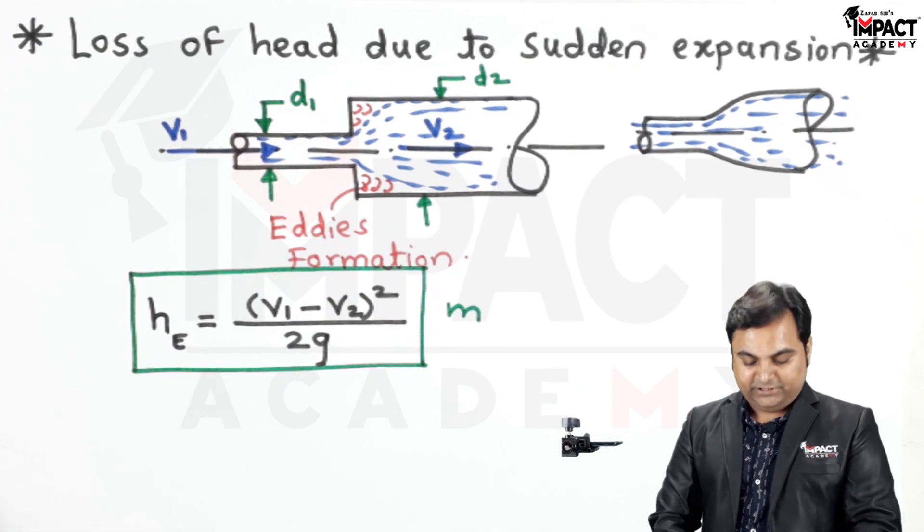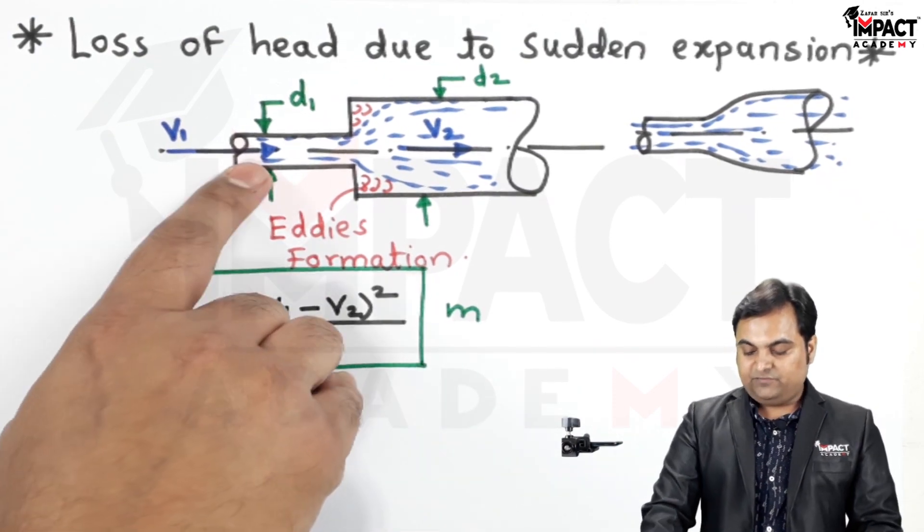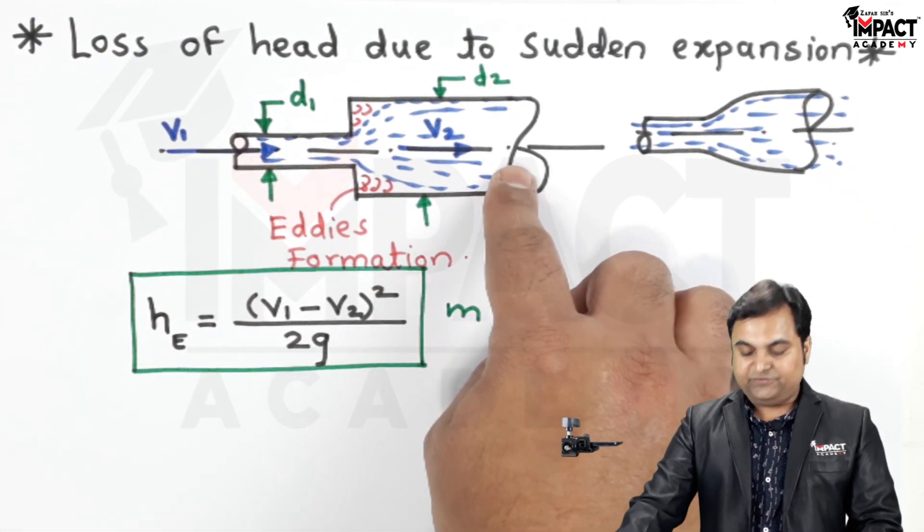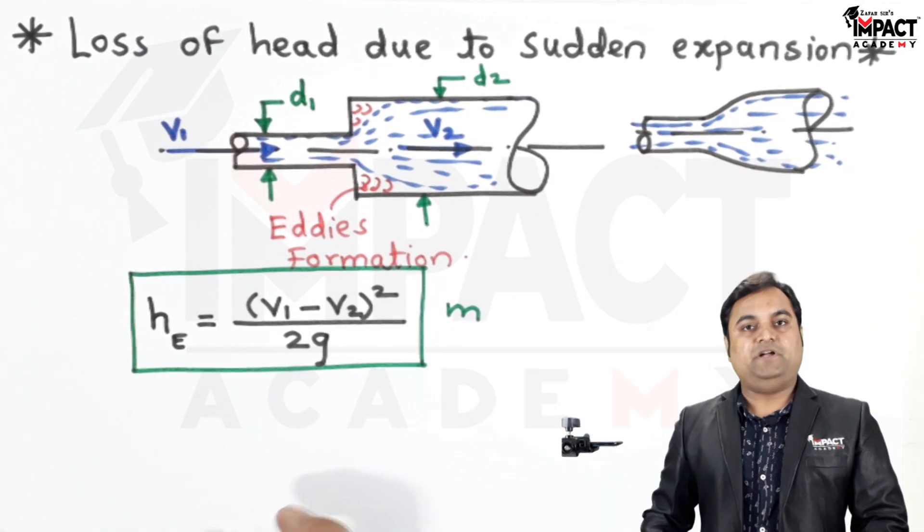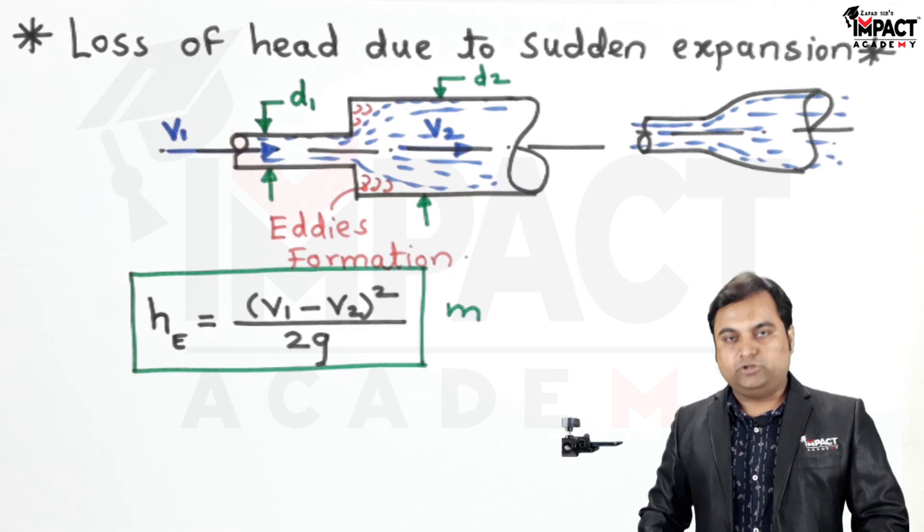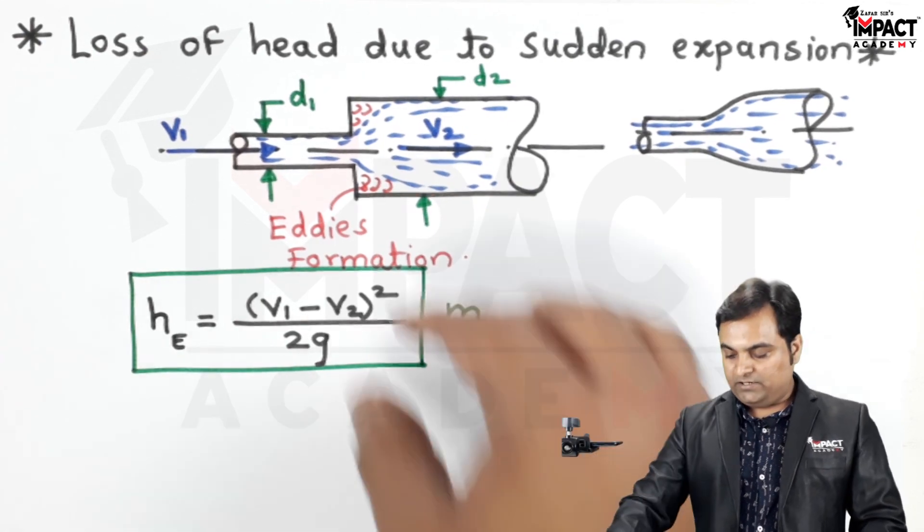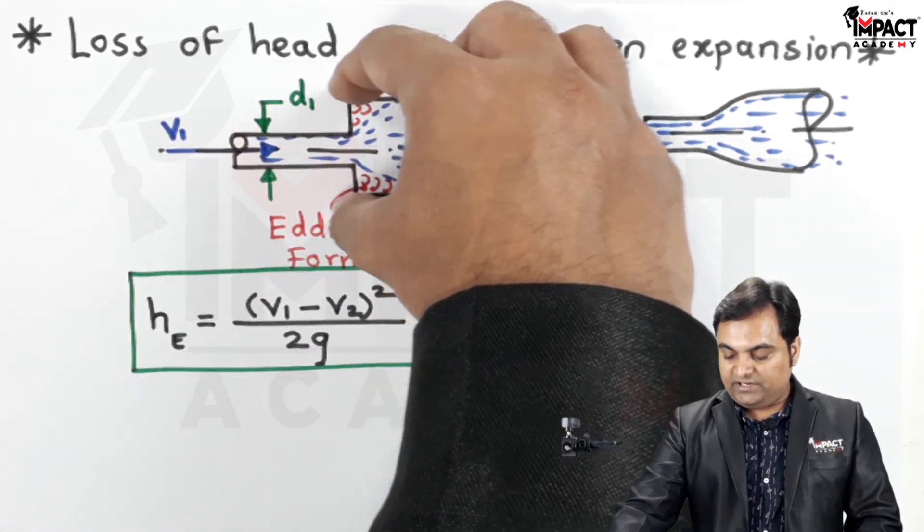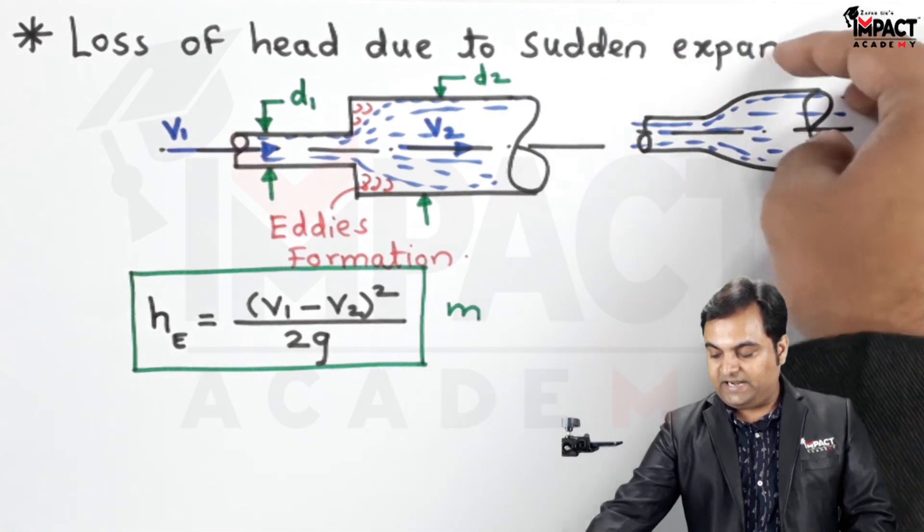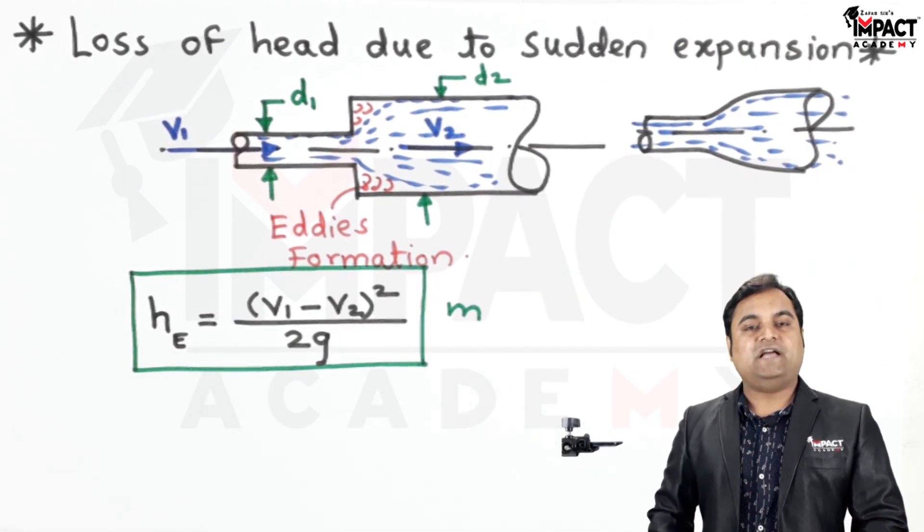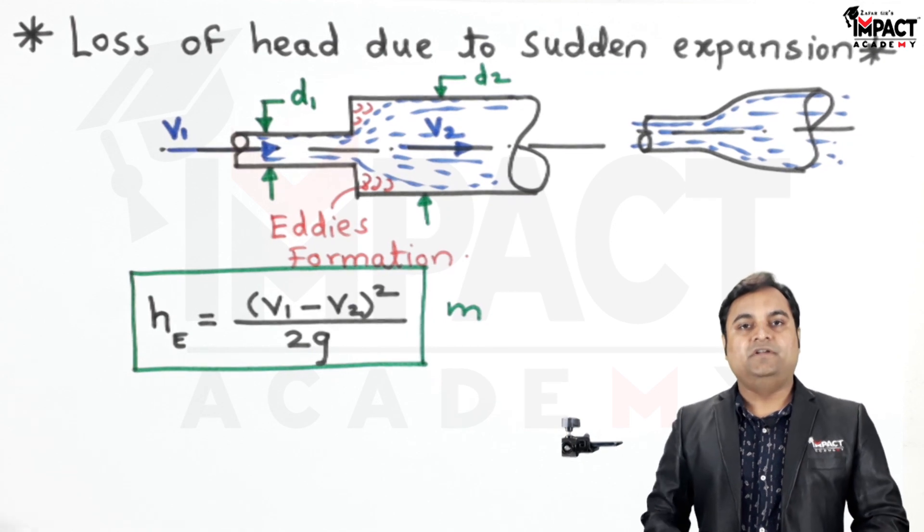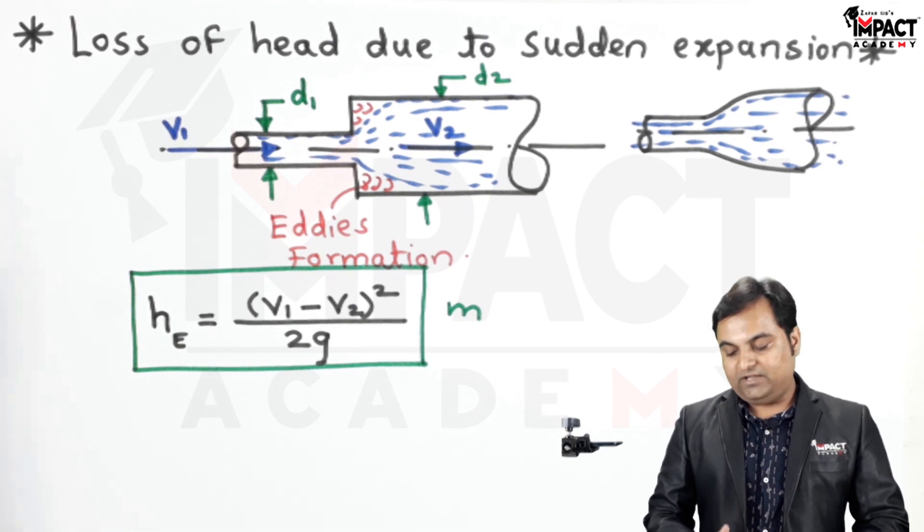Where V1 is the velocity in section 1, V2 is the velocity in section 2, and this is the head loss due to sudden expansion, also called minor loss. This happens when the diameter is increased suddenly and not gradually as we can see in this diagram. This loss has to be considered whenever there is sudden expansion in a given pipeline.